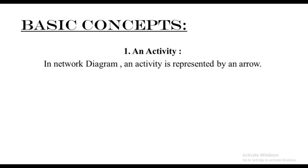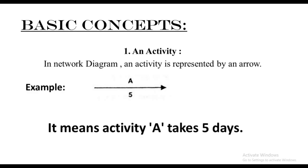Number one: an activity. In a network diagram, an activity is represented by an arrow. For example, we can see an arrow with an alphabet and a number, which represents that activity A takes five days to be completed. So always remember, while drawing a network diagram, the activities will always be represented by an arrow.